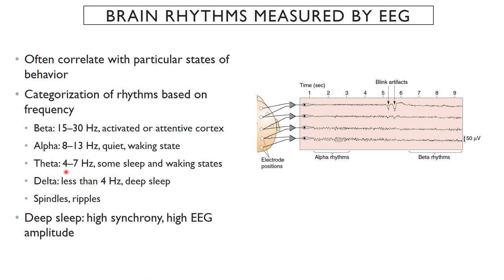Theta rhythms are even slower, around 4 to 8 Hz. Certain wake states can have theta, but some sleep states also have theta rhythms, and they can be observed in specific parts of the brain. Delta rhythms show very large, deep deflections at only around 4 Hz — going up and down only four times per second versus 30 for beta — and this is what we see during deep sleep. There are also other important rhythms such as spindles and ripples, which we have discussed in the context of the hippocampus.